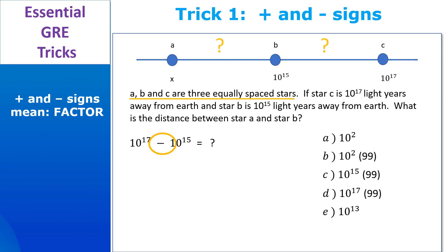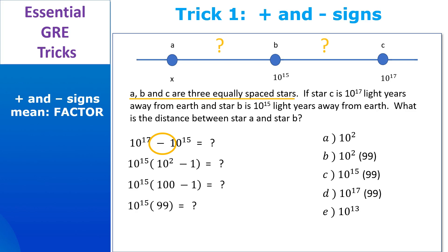See what you have that's the same on the left and right side of the minus sign. We definitely have 10 on each side — in fact, we have 15 tens on each side of the minus sign. So we factor out 10 to the 15th and we're left with 10 squared minus 1 in the parentheses. Now 10 squared is the same as 100, so 100 minus 1 is 99, and our answer choice is C. Nice job.